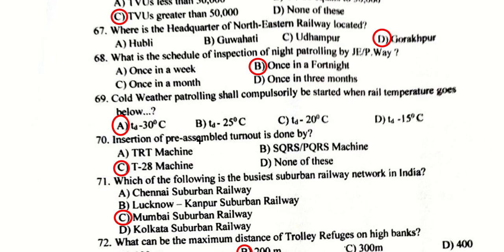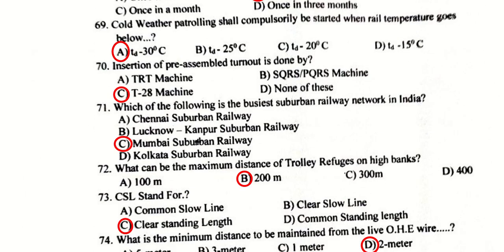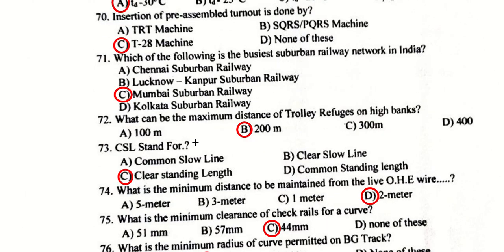The headquarter of Northeast Railway is located at Gorakhpur. The schedule of inspection of night patrolling by JE P-Way is once in a fortnight. Cold weather patrolling shall compulsorily be started when rail temperature goes below TD minus 30 degrees Celsius. Insertion of pre-assembled turnout is done through T2 and T8 machines.